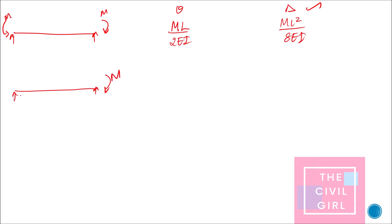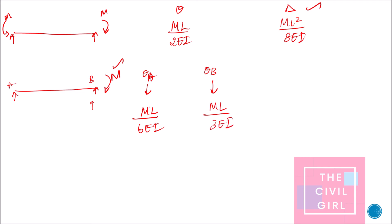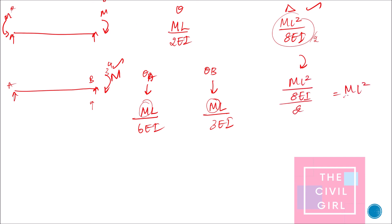If the simply supported beam is subjected to a moment M at only one end — say at B — then the two slopes will differ. Theta A (the farther end) equals ML divided by 6EI, whereas theta B (where the moment is applied) equals ML divided by 3EI. For deflection, since there is only one moment instead of two, the deflection is half of the symmetric case: ML² divided by 16EI.